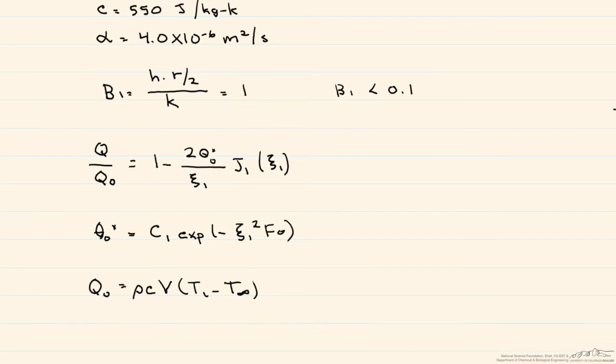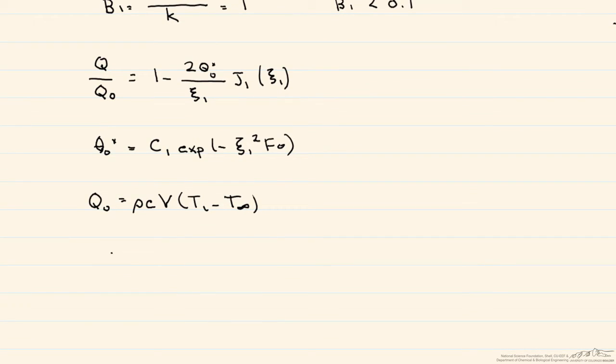So in order to find our C1 and our eigenvalue, we're going to need a table that lists them as a function of the Bi number. However, to use the table, we don't use the Bi number that we used to check for lumped capacitance. What we calculated is just H times R, not R over 2 divided by K. So in terms of using the table, our Bi number is 2.